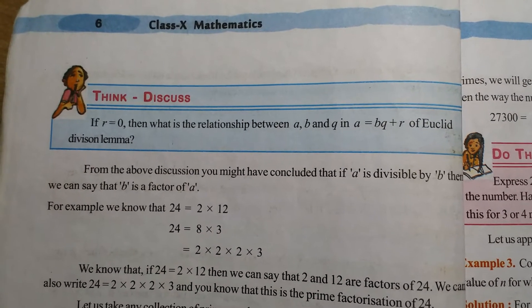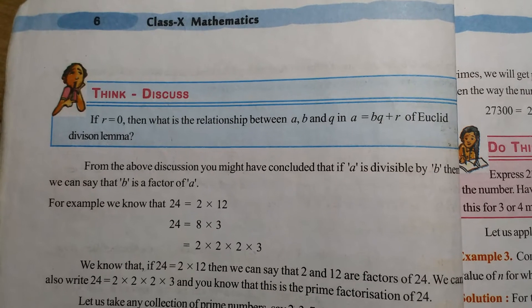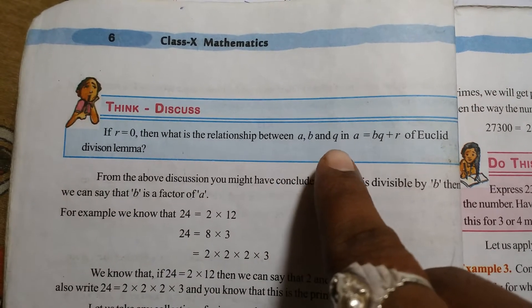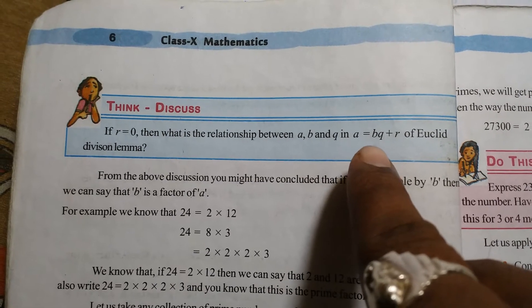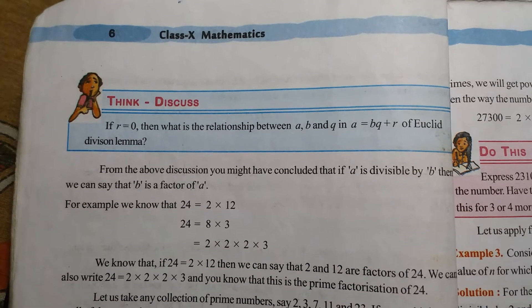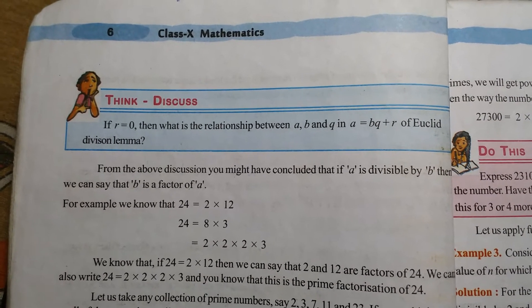Think and discuss: If r = 0, then what is the relationship between a, b, and q in a = bq + r of Euclid's division lemma? So he is asking that if the remainder is...